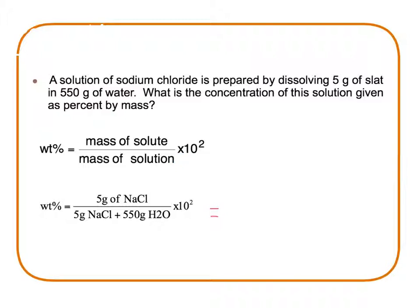Our problem states that we have 5 grams of salt, and our mass of solution would be the mass of water plus the mass of salt. So we have 5 grams plus 550 grams. We take the 5 grams of salt divided by 555 grams times 100, and we would get an answer.